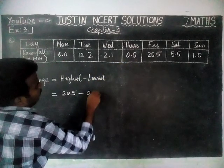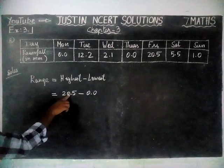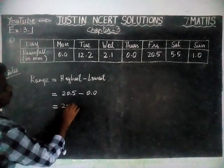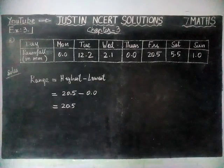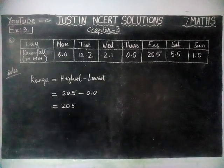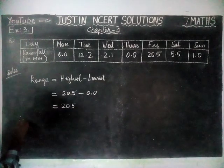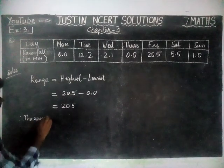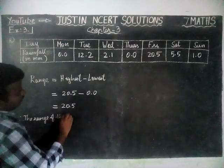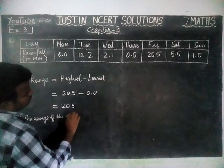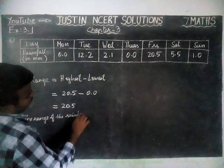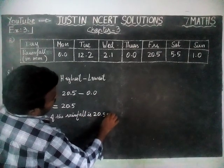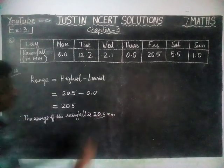0.0. Therefore, highest minus lowest is equal to 20.5. So the answer to the first question: the range of the rainfall is 20.5 millimetres.